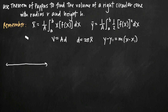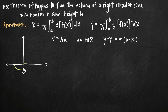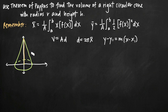The easiest way to do a problem like this is to imagine that our figure is positioned with its base at the origin. In our case, it's helpful to position the center of the base of the cone at the origin. We draw the base here, and the cone comes up with the top centered on the y-axis. We've been told the height of the cone is h and the radius of the cone is r.